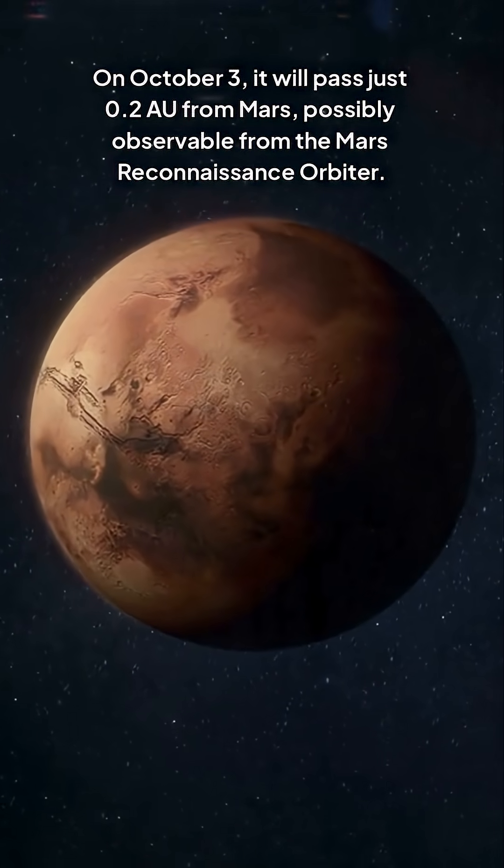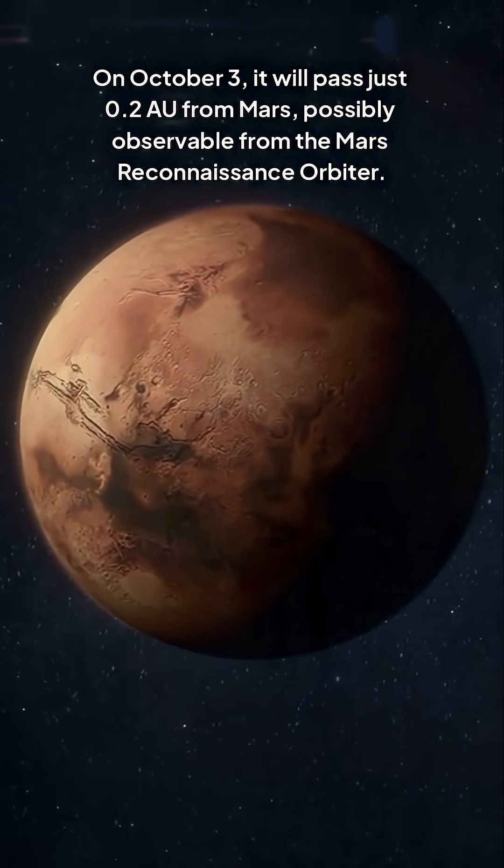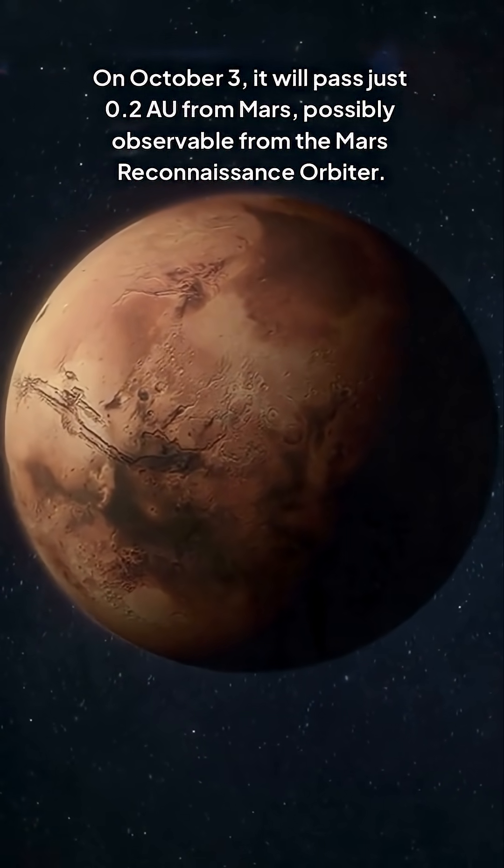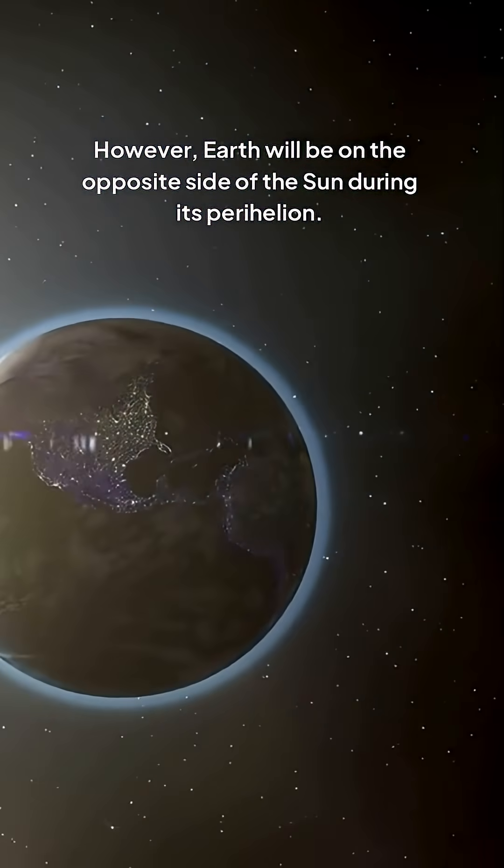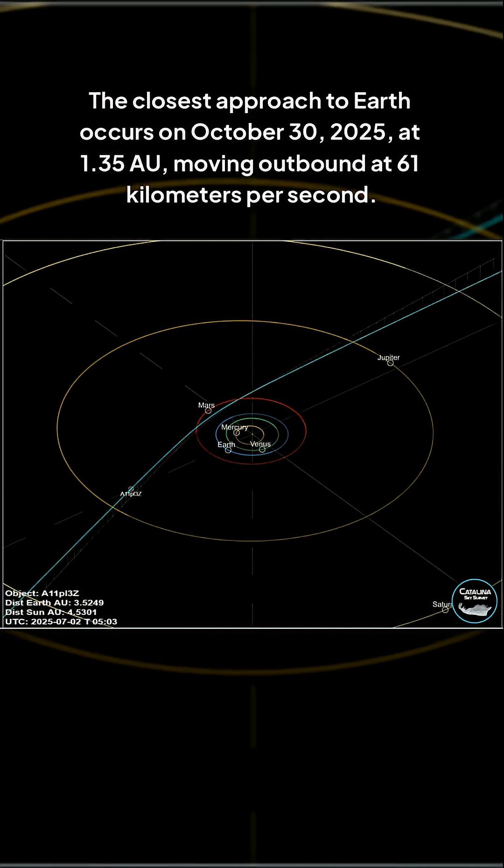On October 3, it will pass just 0.2 AU from Mars, possibly observable from the Mars Reconnaissance Orbiter. However, Earth will be on the opposite side of the Sun during its perihelion.